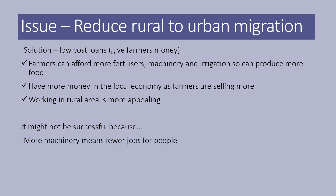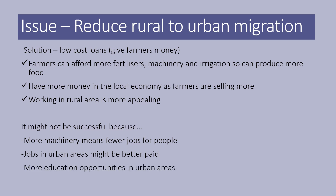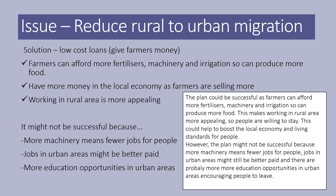But it might not be successful, because more machinery means fewer jobs for people. Farmers in rural areas tend to have larger families because they need people to work on the farm — you suddenly get money, buy more machinery, but what do you do with the people who've already been born and want to work? Jobs in urban areas might still be better paid, so people still want to leave. And there are probably more education opportunities in urban areas and generally more things to do — push and pull factors. So the plan could be successful as farmers can afford more fertilizers, machinery, and irrigation to produce more food, boosting the rural economy. However, the plan might not be successful because more machinery means fewer jobs and urban areas likely offer better pay and education.